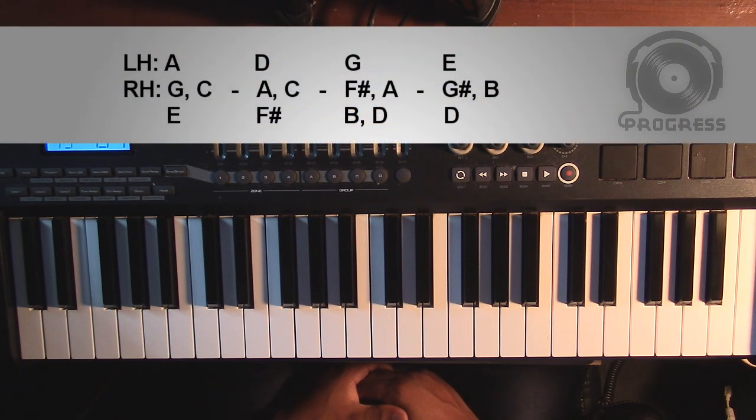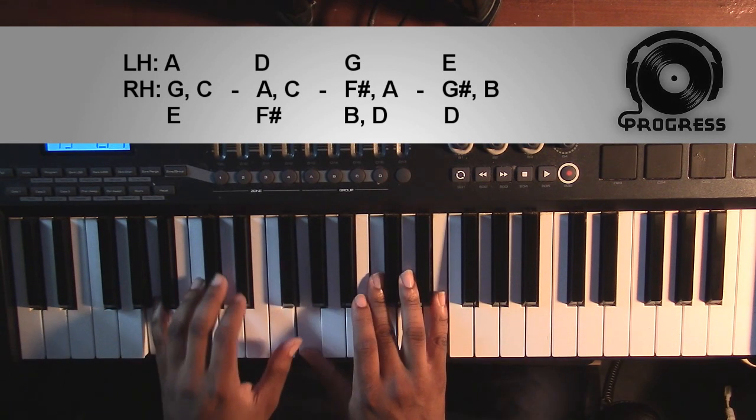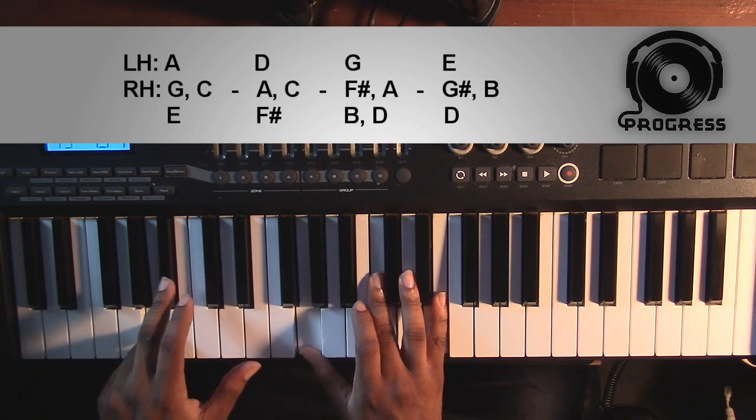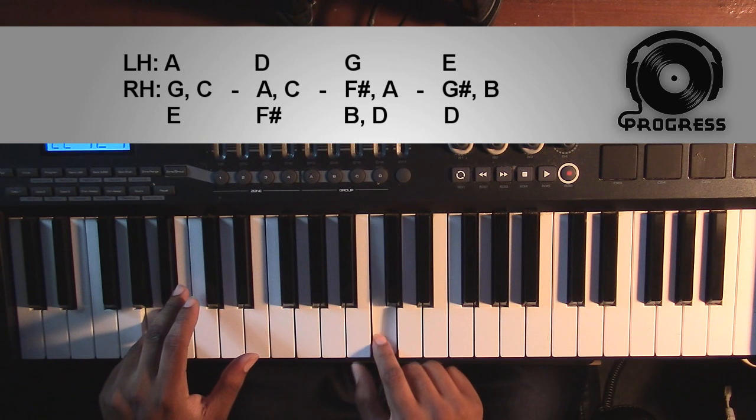With the first set, it's going to start off with an A minor seven. Left hand you're going to have an A, right hand you have a G, a C, and an E.